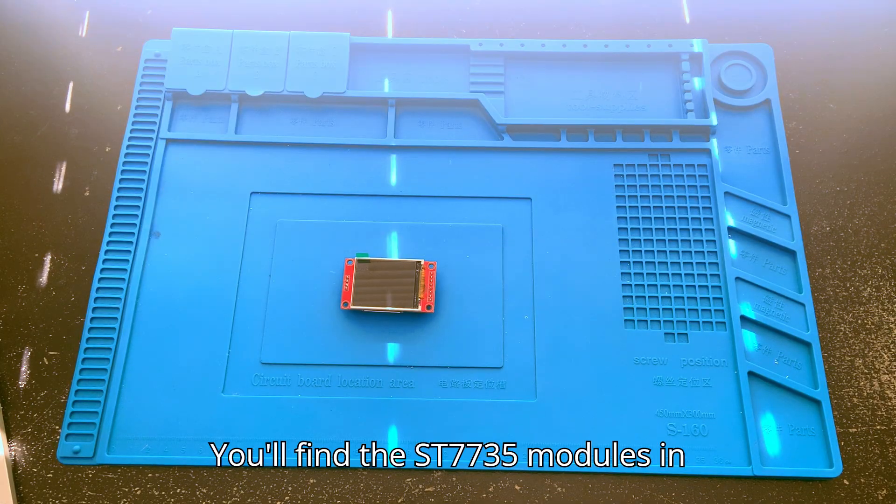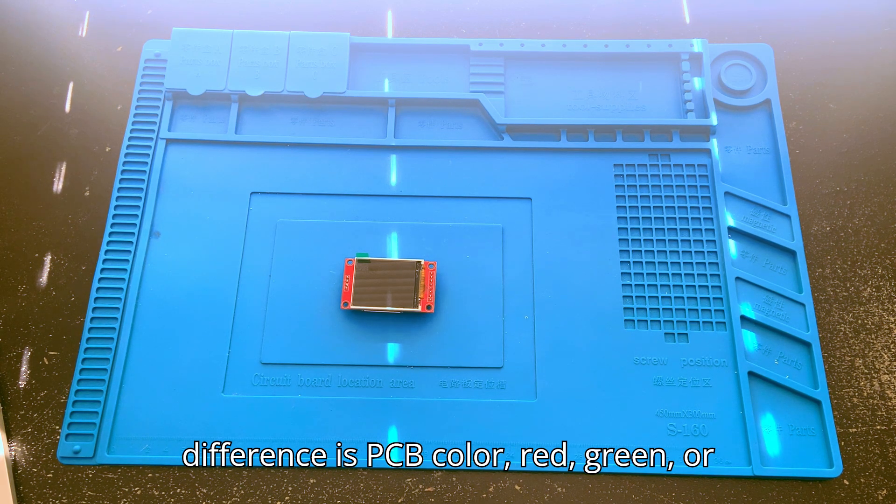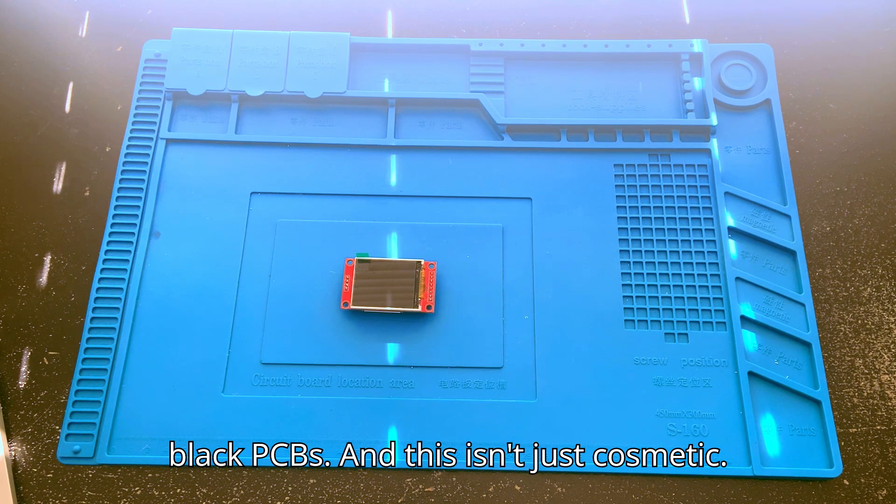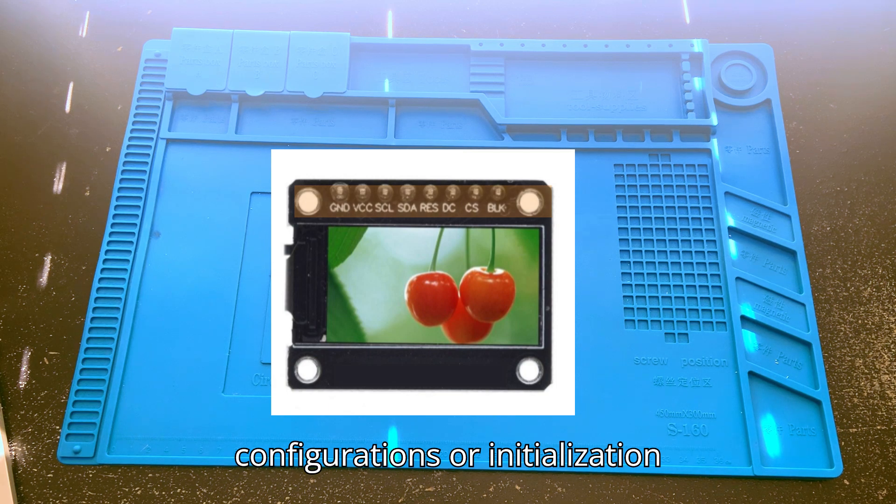You'll find the ST7735 modules in several variants. The most common difference is PCB color: red, green, or black PCBs. And this isn't just cosmetic. They often have slightly different pin configurations or initialization sequences.